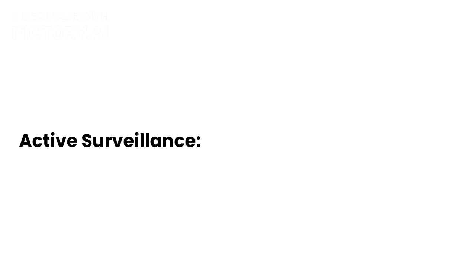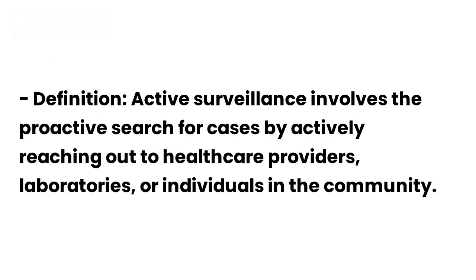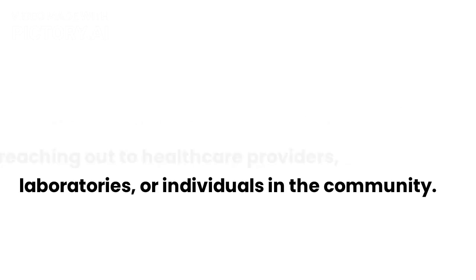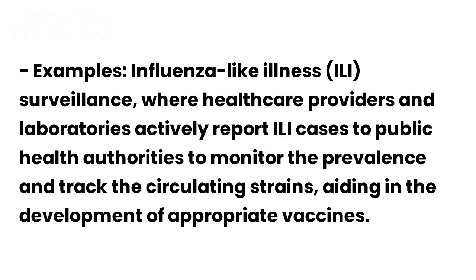2. Active Surveillance. Definition: Active surveillance involves the proactive search for cases by actively reaching out to healthcare providers, laboratories, or individuals in the community. Example: Influenza-like illness (ILI) surveillance, where healthcare providers and laboratories actively report ILI cases to public health authorities to monitor the prevalence and track the circulating strains, aiding in the development of appropriate vaccines.